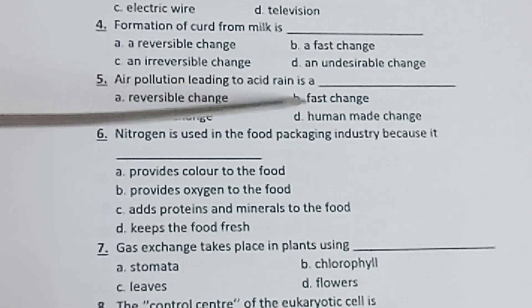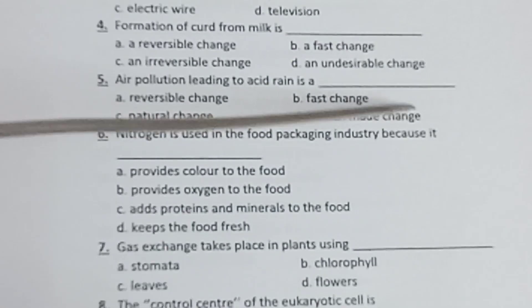Fifth one: Air pollution leading to acid rain is a - a) reversible change, b) fast change, c) natural change, d) human made change.